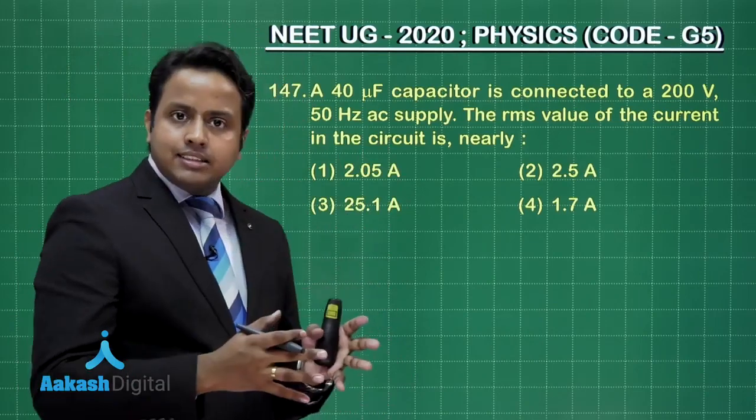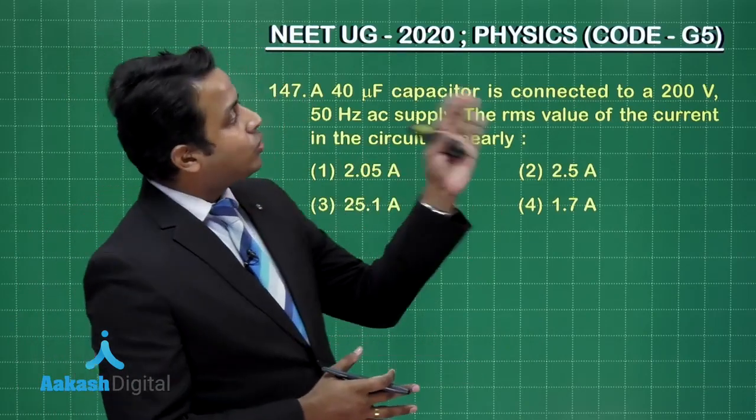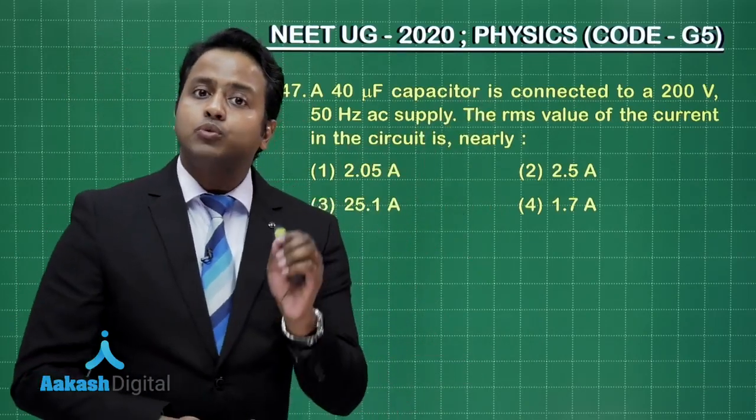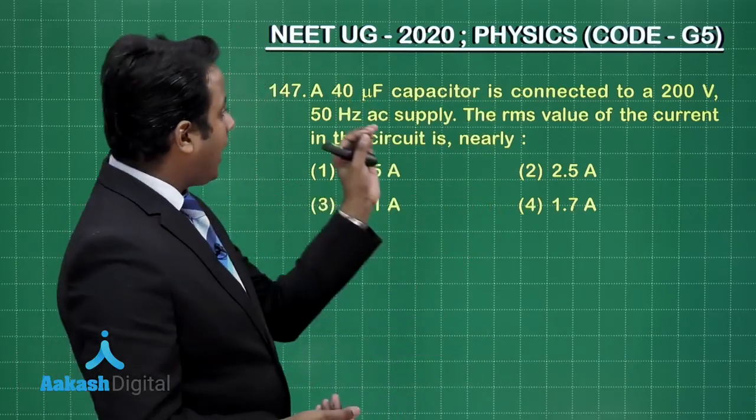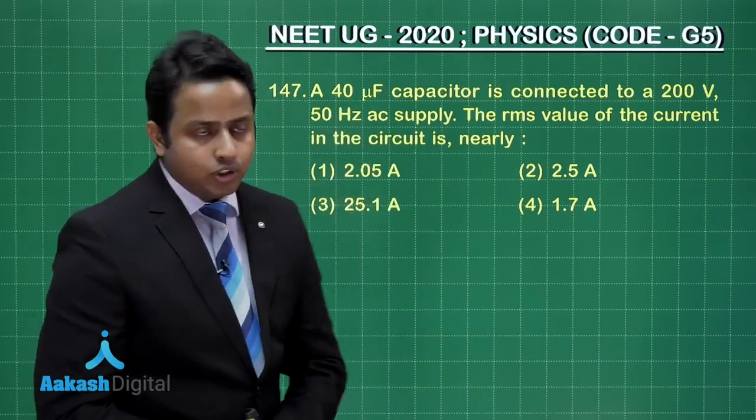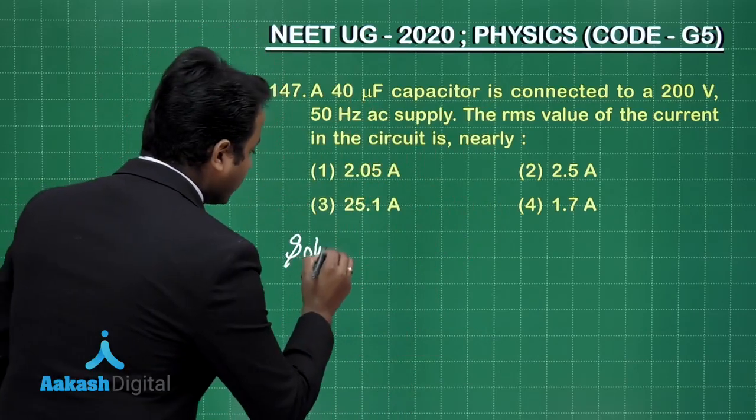Now, clearly this is a AC circuit when in which the 200 volt is the RMS voltage supply to the capacitor and the frequency 50 hertz is given to you. So, simply let us try to solve this question.